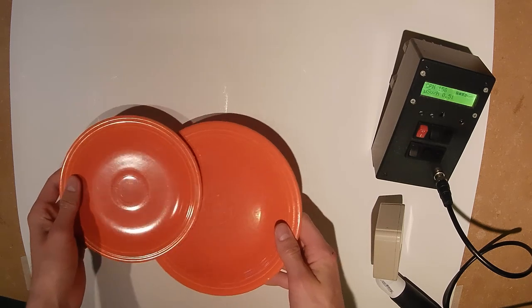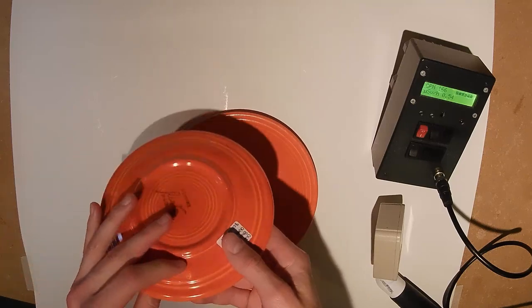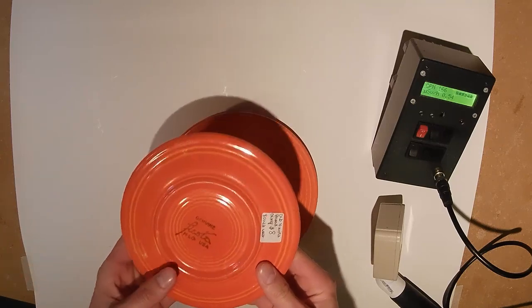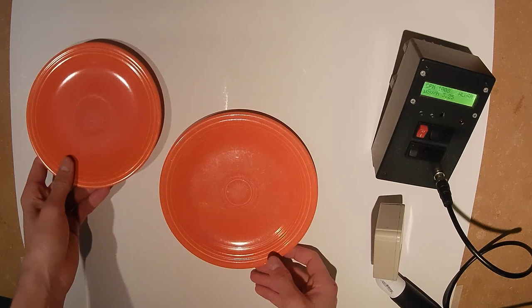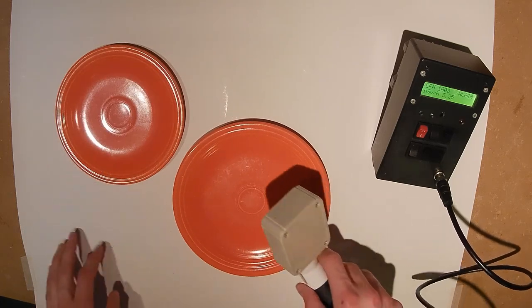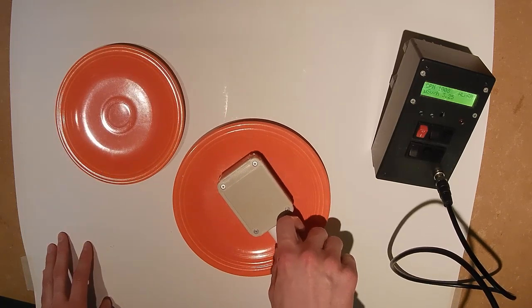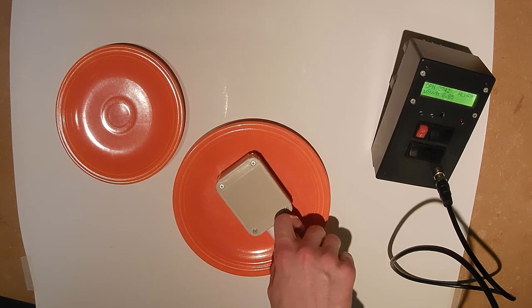First and foremost, here are two bright red-orange fiesta plates. The fiesta line was made by the Homer Lawland China Company and might be the most well-known example of uranium use in ceramic glazes. They both register about 9,000 counts per minute.